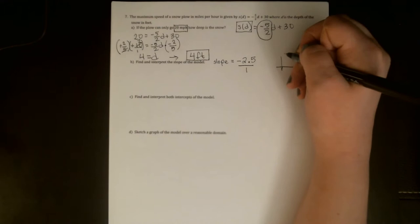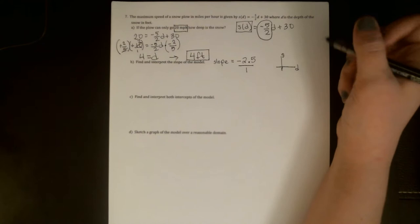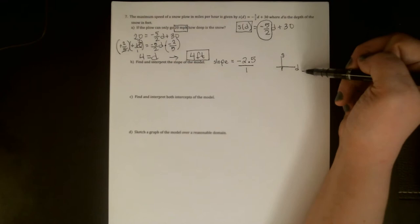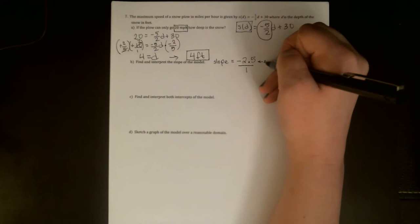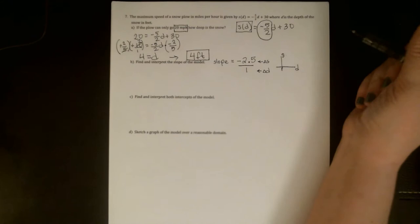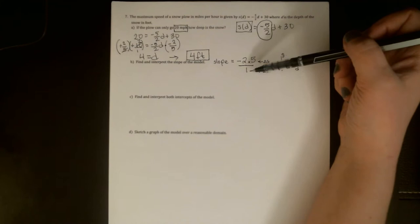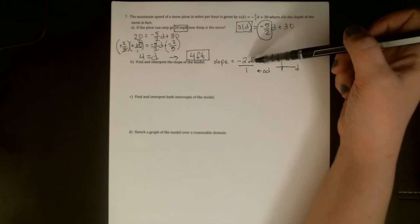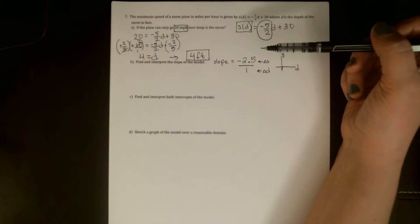So we need to be able to identify the slope for starters. Hopefully that's easy here. We were given the equation. If the equation is negative 5 halves d plus 30, then the slope is this coefficient on the variable negative 5 halves. Or if you'd like, you can rewrite that as negative 2.5. My general rule is anytime you're working on a word problem, it's completely acceptable for me for you to turn things into decimals if that makes them a little easier to make sense of.